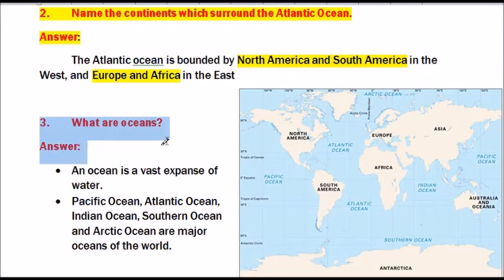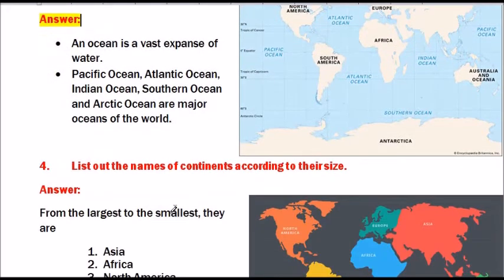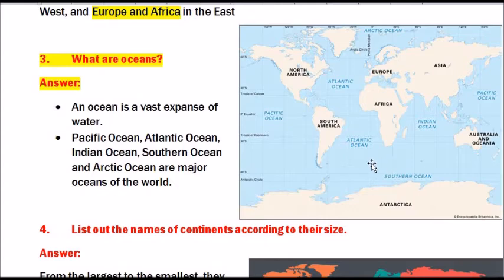Question number 3: What are oceans? An ocean is a vast expanse of water. Pacific Ocean, Atlantic Ocean, Indian Ocean, Southern Ocean and Arctic Ocean are the major oceans of the world.